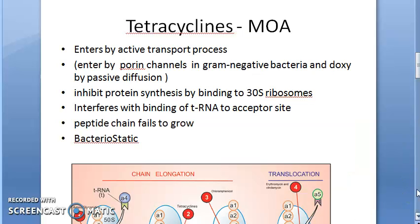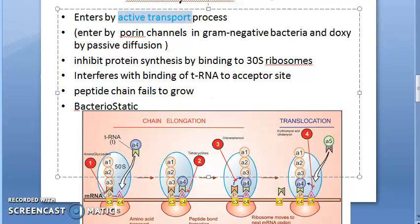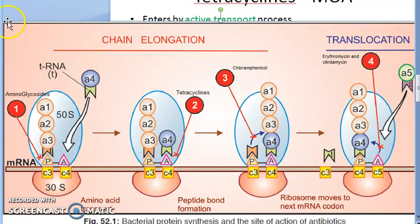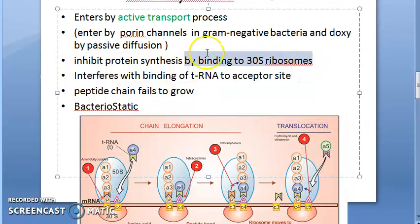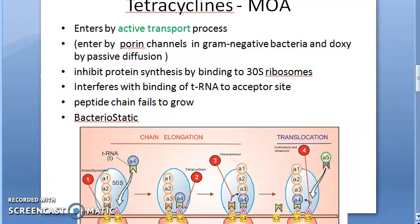What should we study under tetracyclines? Mechanism of action — not very detailed, not required according to the exam structure. Tetracyclines enter by active transport, which is an energy-consuming process. They inhibit protein synthesis by binding to the 30S ribosome. tRNA cannot bind to that site, so protein elongation cannot happen. It binds to the 30S ribosome, interferes with binding of tRNA to the acceptor site, and the peptide chain fails to grow. That is why it is bacteriostatic.